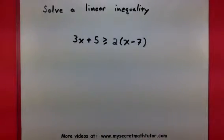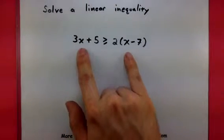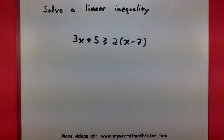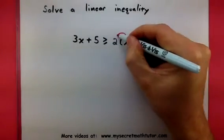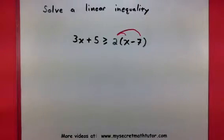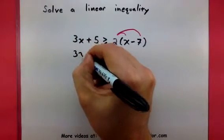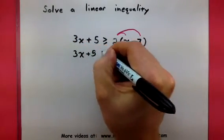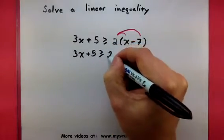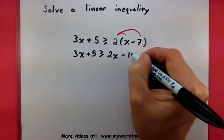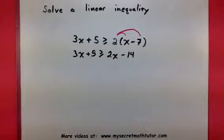So other than that, it's going to look a lot like solving an equation. So as I go through trying to solve this thing, my first thing I'm trying to do is get these x's together. So I'm going to break this guy out of my parentheses by using distribution, and this will give me 3x plus 5 greater than or equal to 2x minus 14. All right, not so bad.